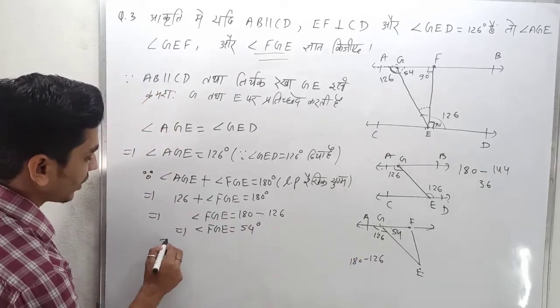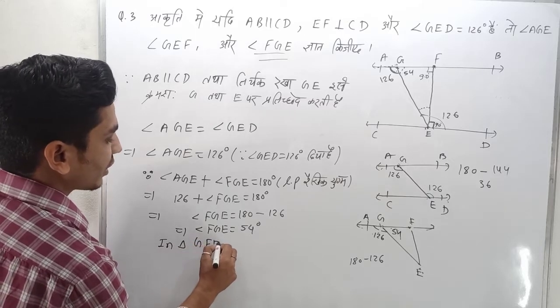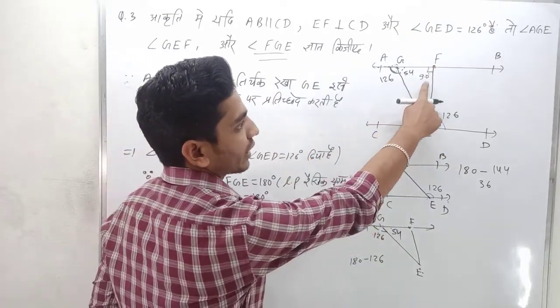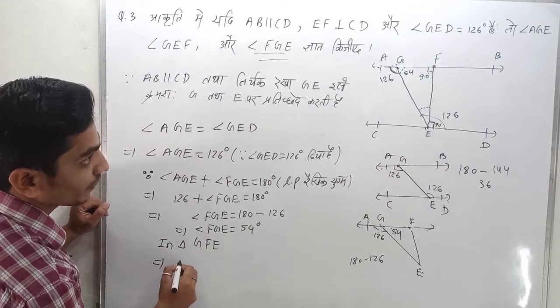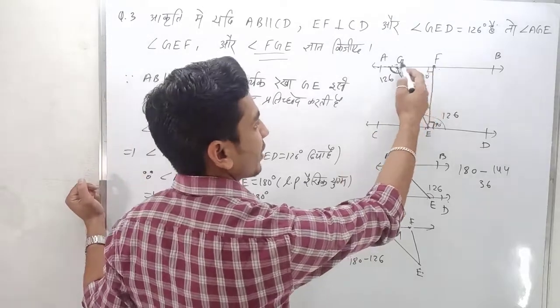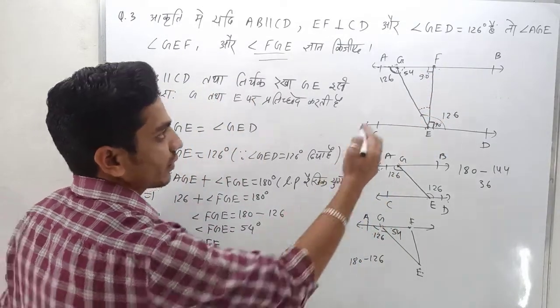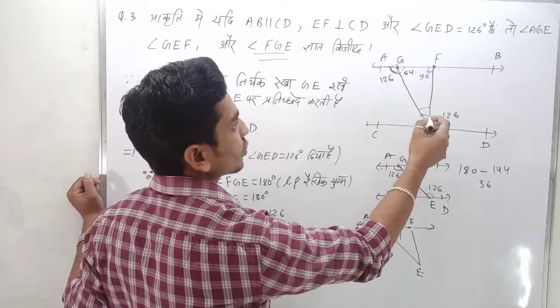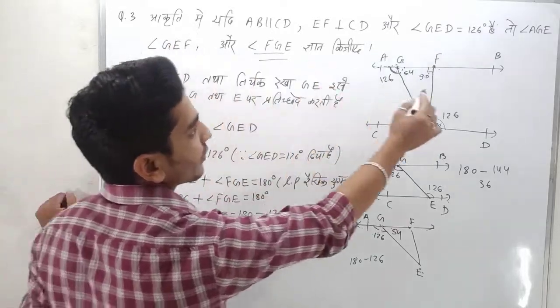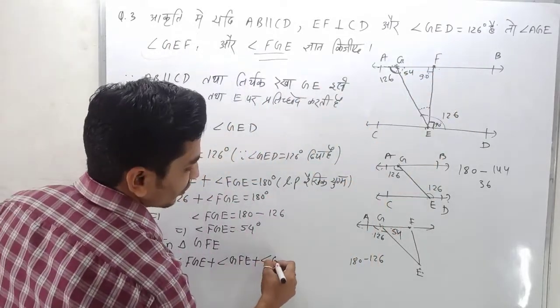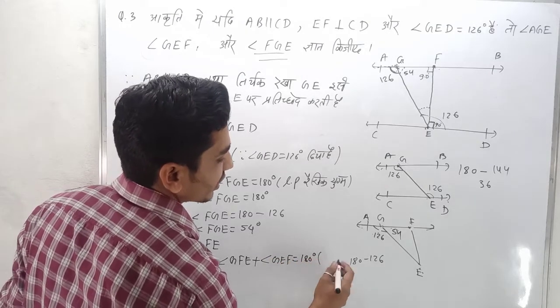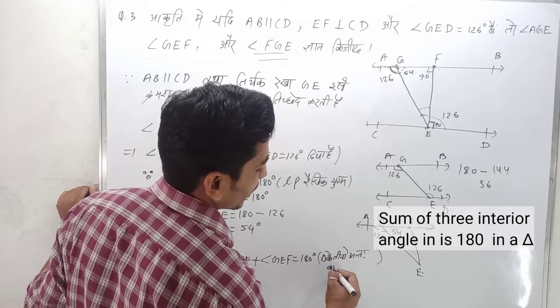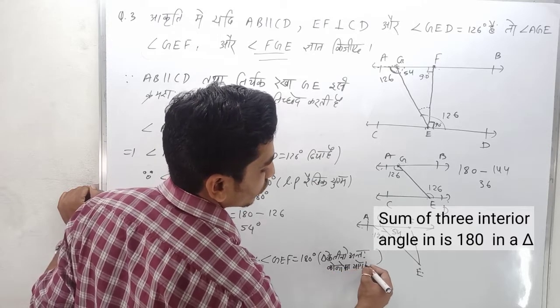In triangle ZFE, there are three angles: FGE, angle ZE, and the angle we need to find ZEF. The sum of these three interior angles is 180 degrees.